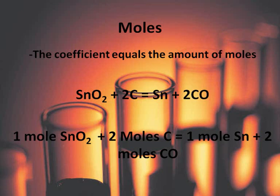For example, tin oxide reacts with carbon to form tin and carbon monoxide. As we see, tin oxide has a coefficient one, so we have one mole of tin oxide. The carbon has a coefficient two, so we have two moles of carbon.